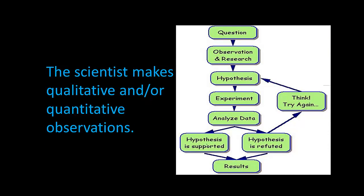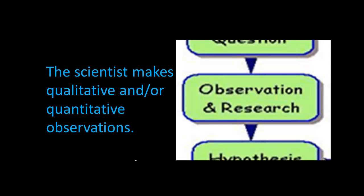The second step: the scientist makes qualitative and/or quantitative observations. We are going to go over what qualitative and quantitative means in just a moment. That is the observation and research part of the scientific method.